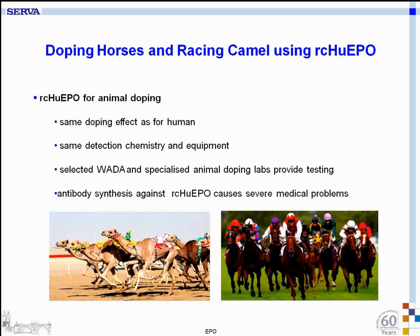A few words about doping for horses and racing camels. Using human recombinant EPO has the same doping effect in animals as in humans, and the same detection chemistry and equipment is required. There are selected WADA and specialized animal doping laboratories around the world providing testing. Notably, antibody synthesis against recombinant human EPO causes severe medical problems — a true downside of EPO doping in animals.